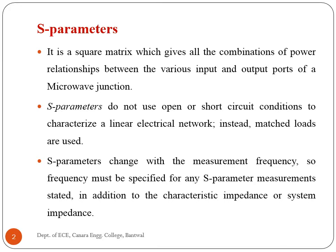The traveling waves with associated powers scatter out through the ports. A microwave junction can be defined by S-Parameters. In the last class we discussed S-Parameters for two-port networks and multi-port networks. S-Parameters form a square matrix which gives all the combinations of power relationships between the various input and output ports of a microwave junction.